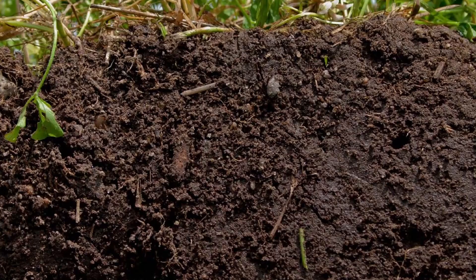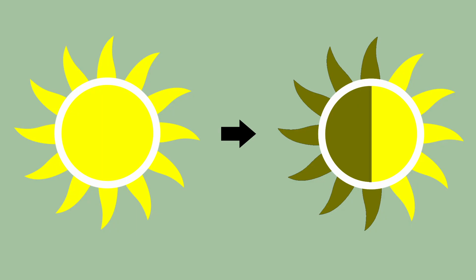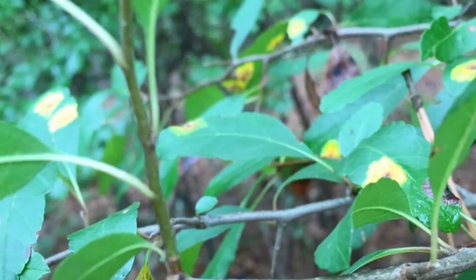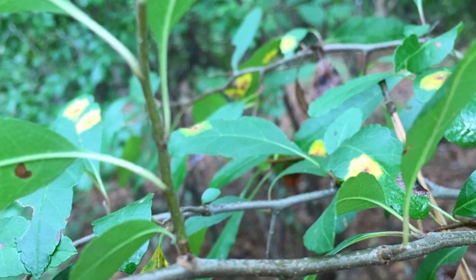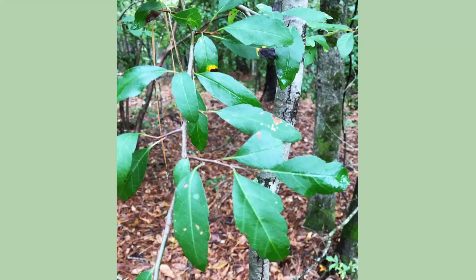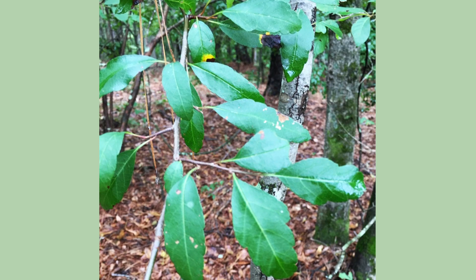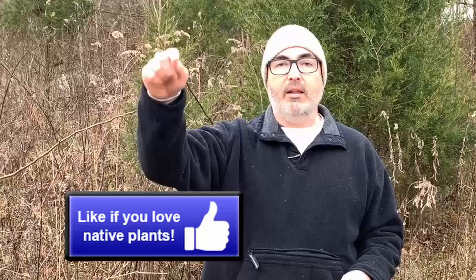Southern crab apple prefers moist but well-drained soils in full sun to partial shade. In areas with mild winters, it may remain semi-evergreen. It is often called narrow-leaf crab apple due to some of its leaves being slender.